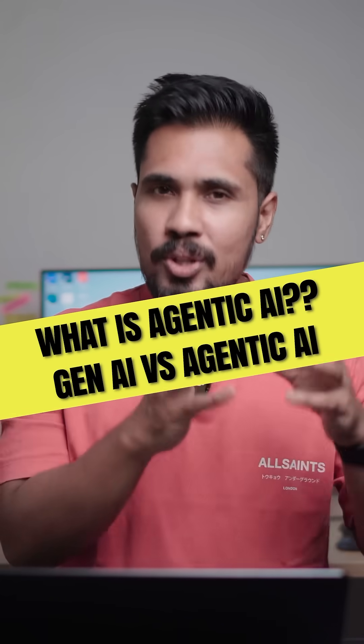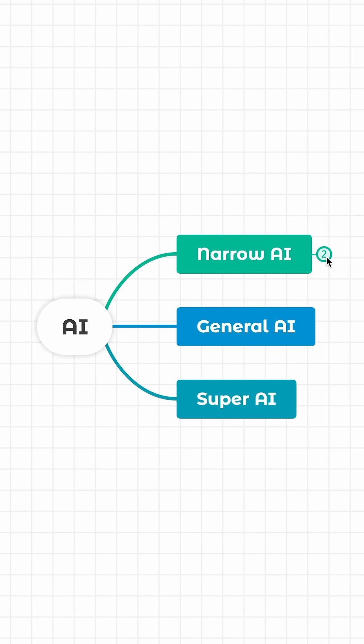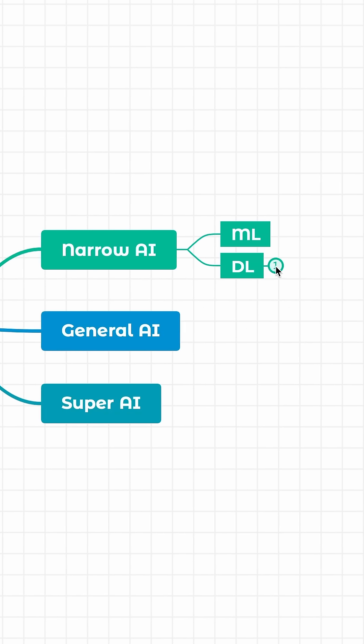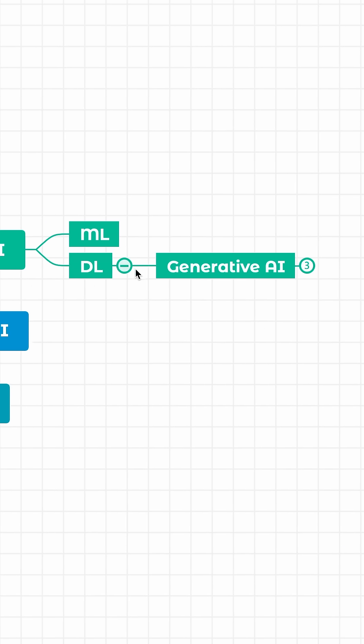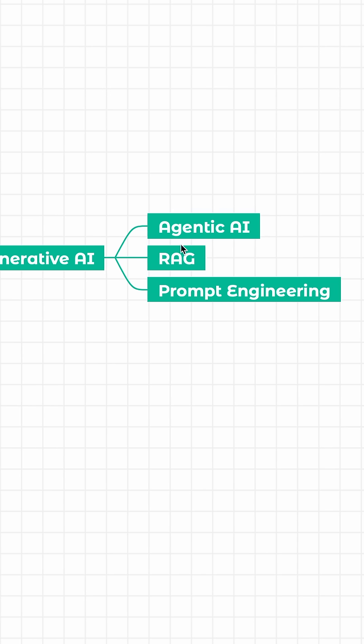AI versus Generative AI versus Agentic AI. AI is the major house, and within that we have branches like Generative AI and Agentic AI.